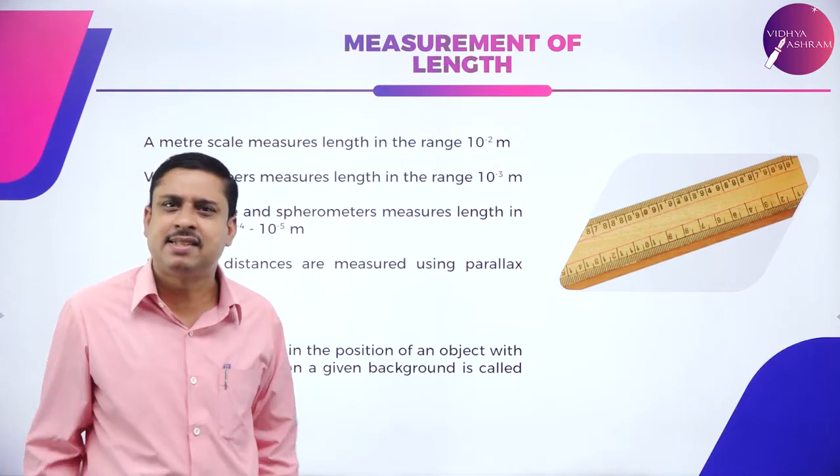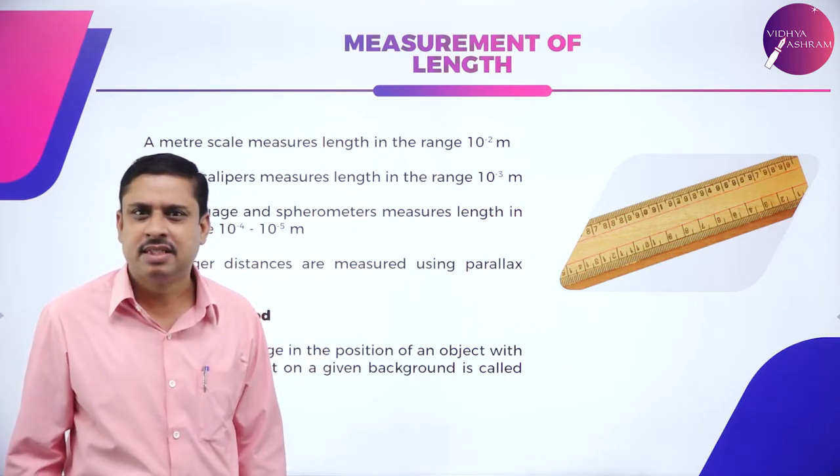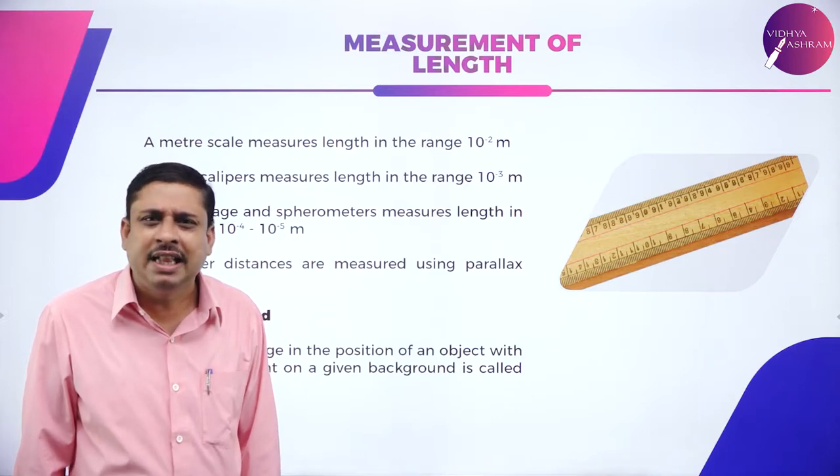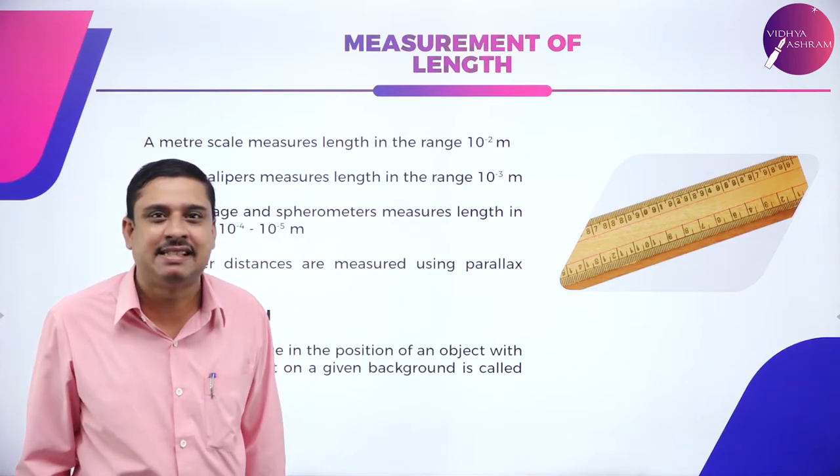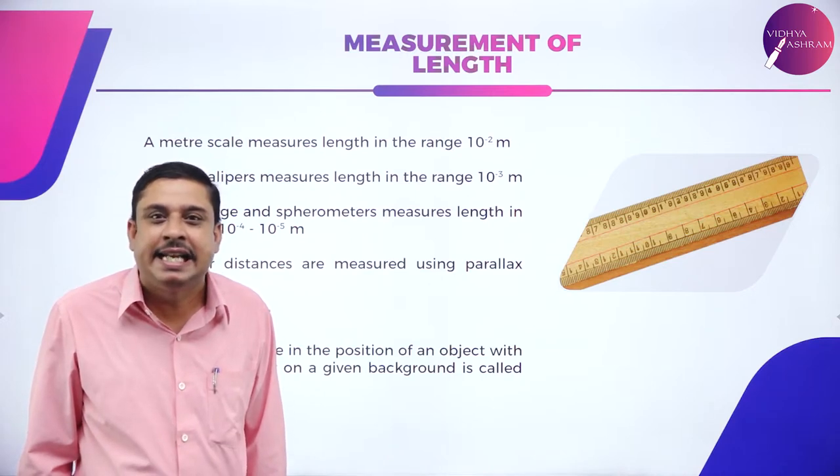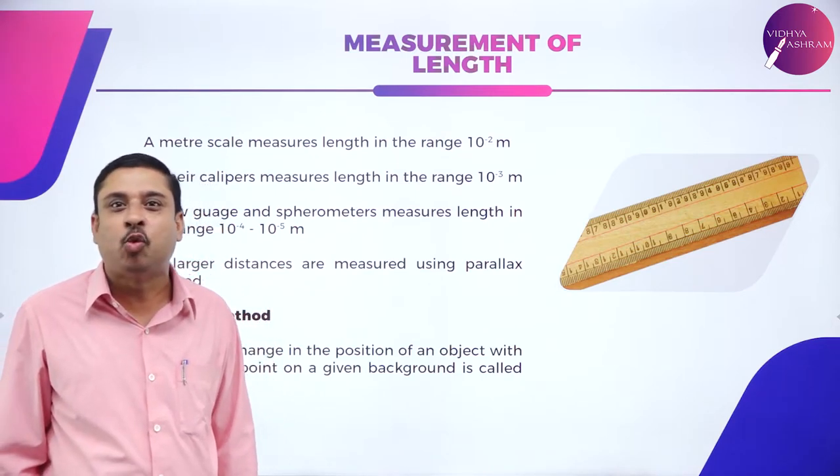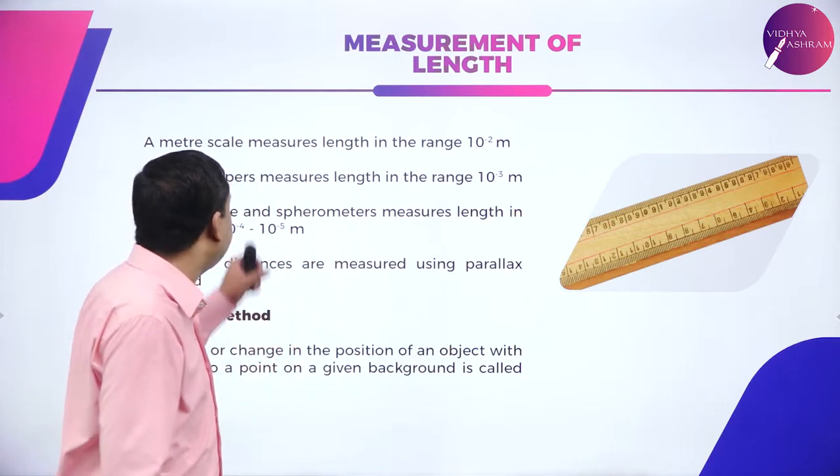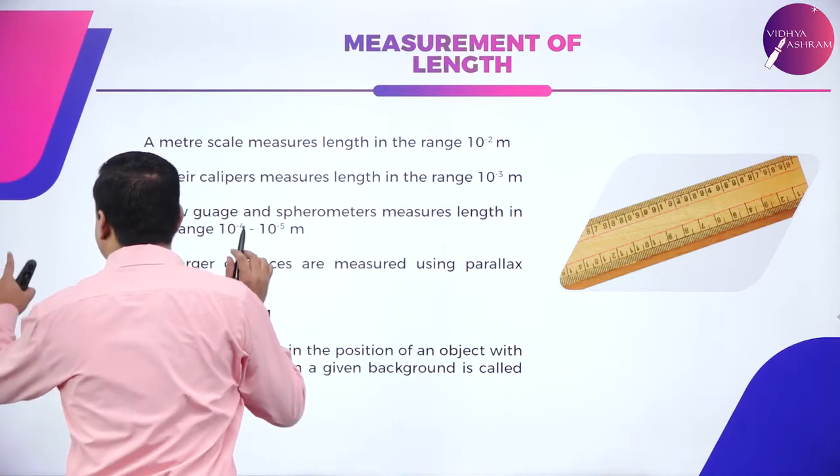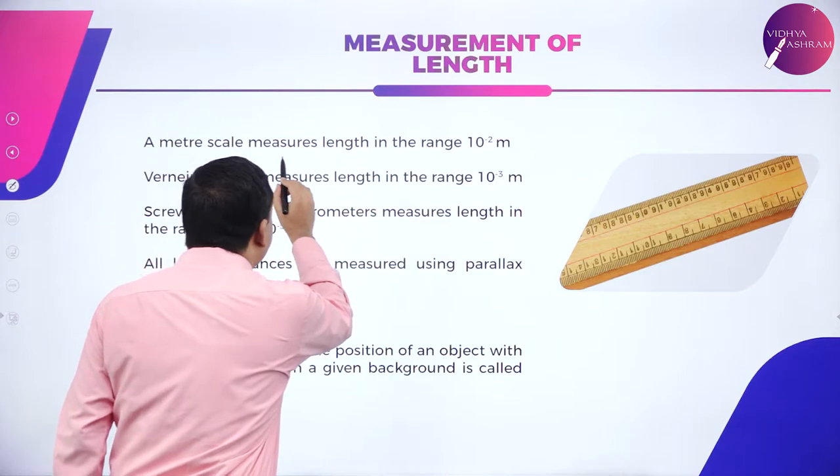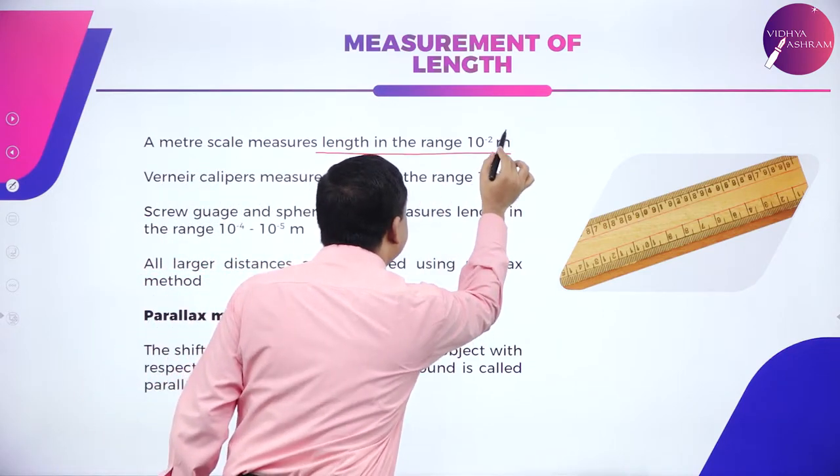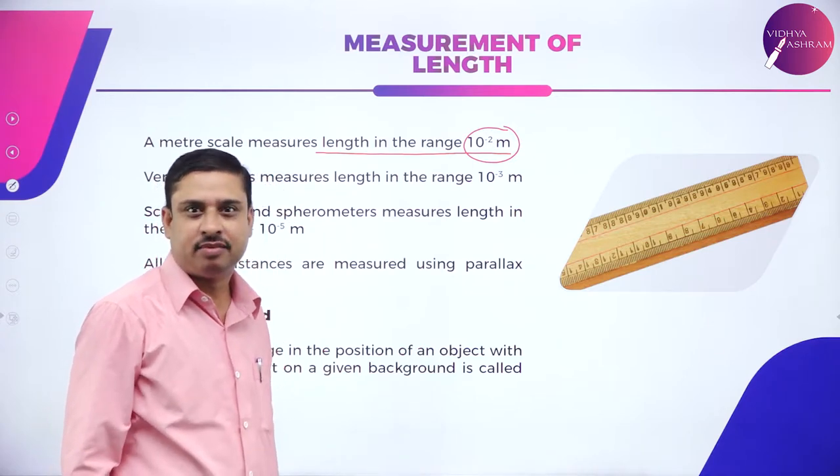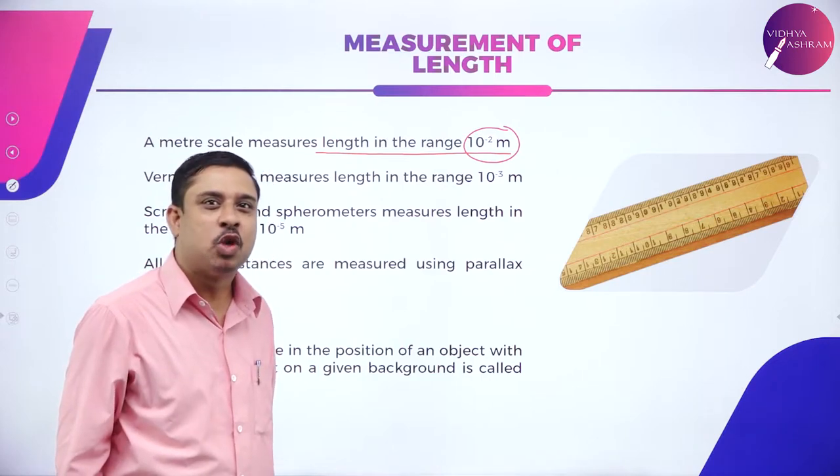Some distance, some height, some displacement, some depth. All these parameters are expressed in terms of a physical quantity called length. So if I observe here, a meter scale will always measure length in the range 10^-2 meter.